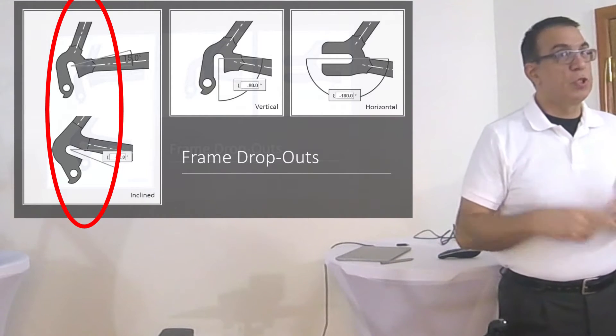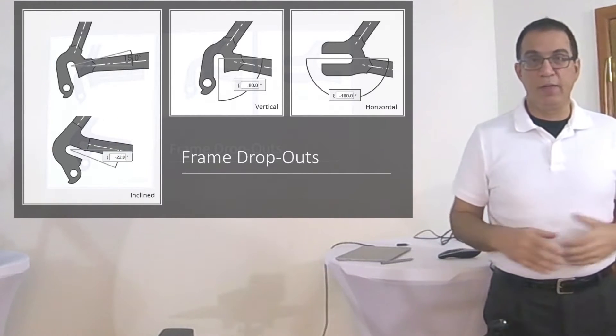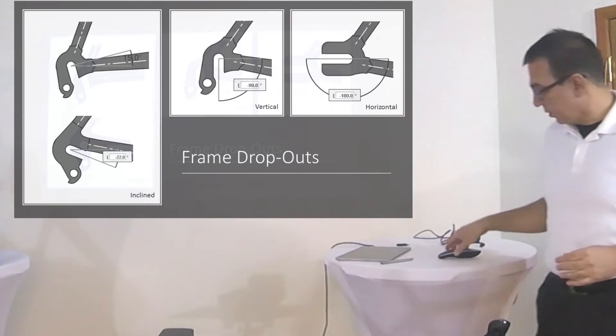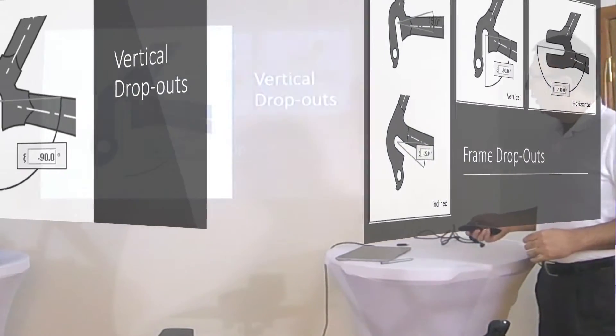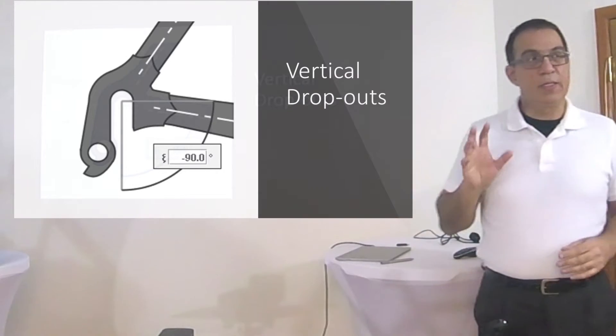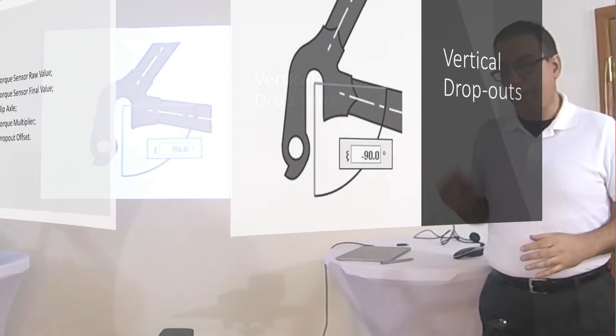The majority of dropouts used in the bike industry are the vertical dropouts. So we are going to focus on how to calibrate the torque sensor for vertical dropouts.